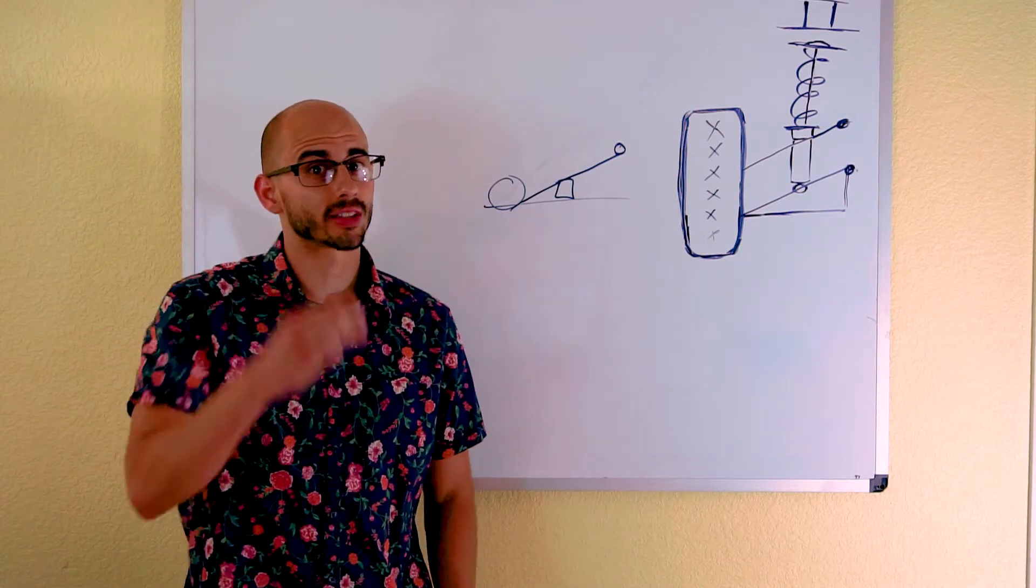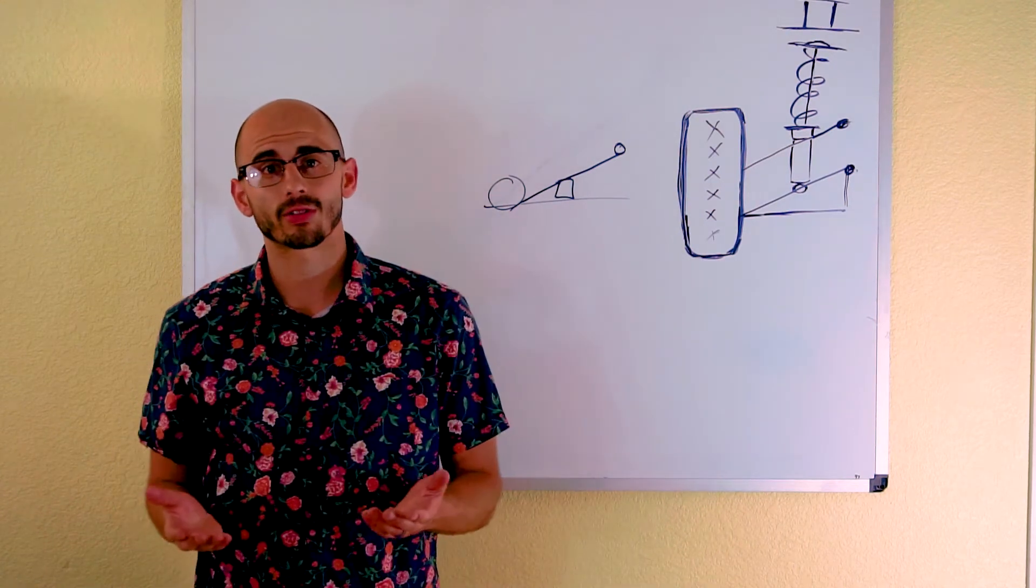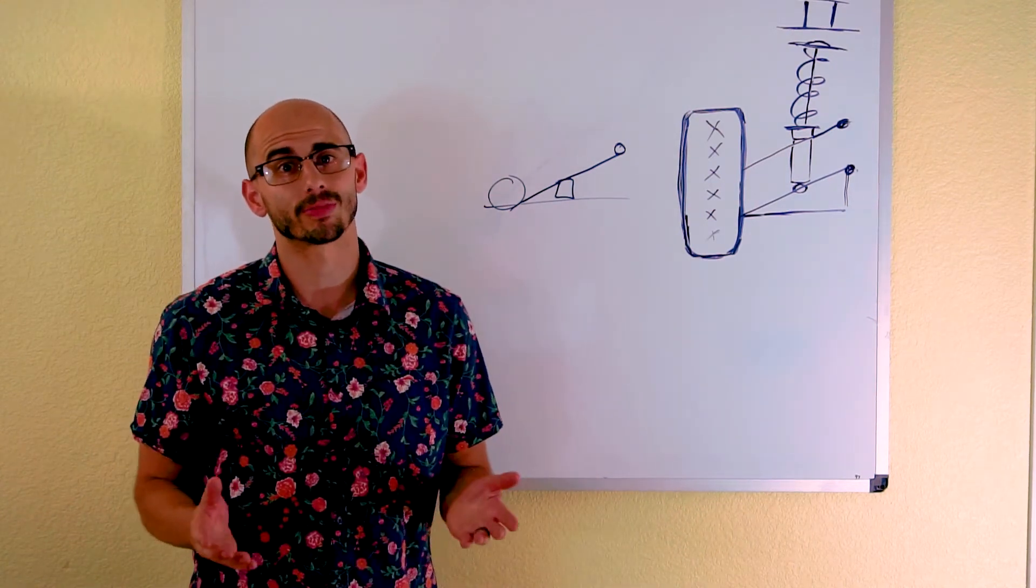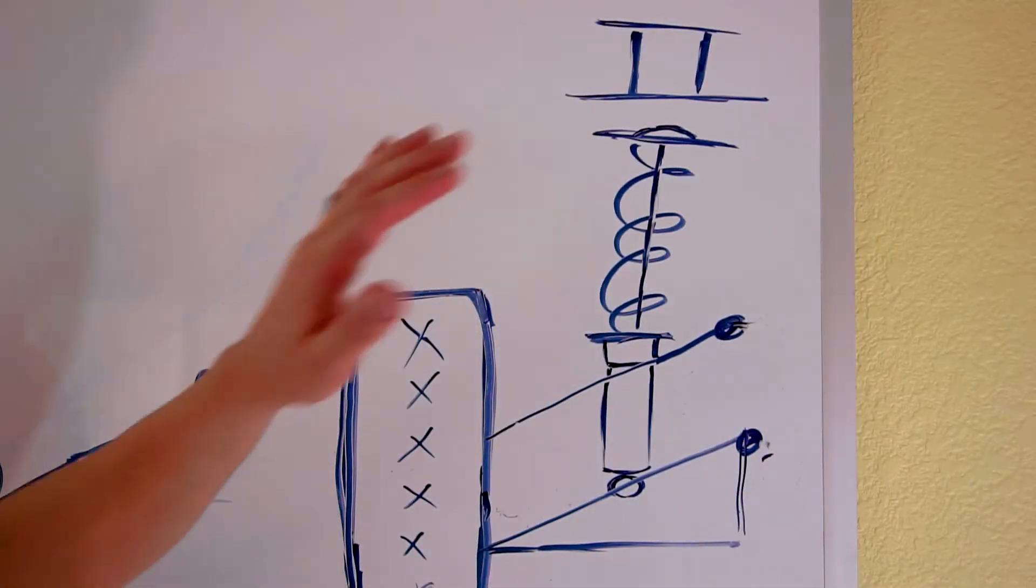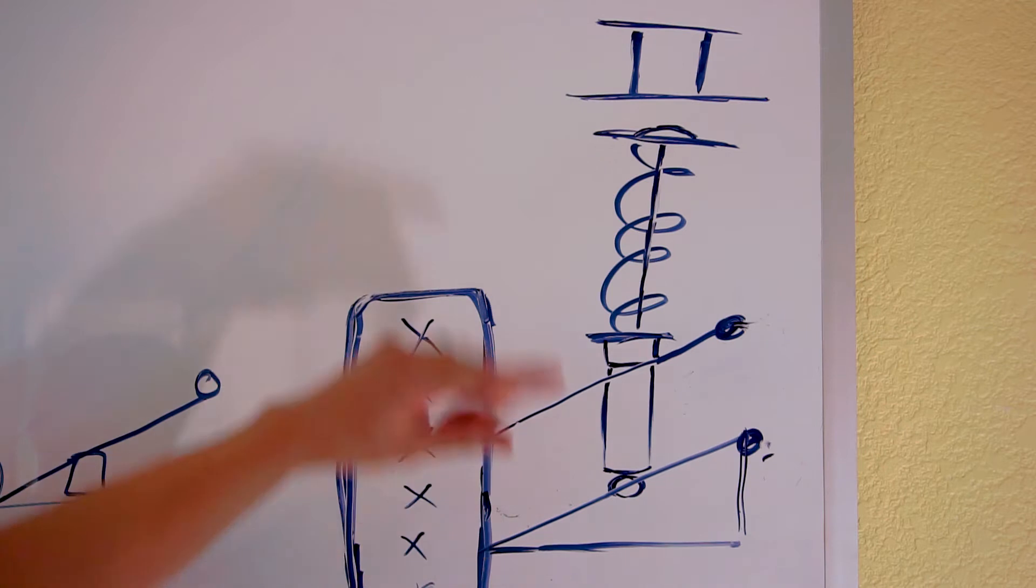If you take a look at the diagram that I have behind me, I will show you how your spacer works in correlation with your front suspension. This is a basic diagram representing your vehicle suspension. Here you have your tire, your upper and lower control arms, your strut, and your strut spacer.